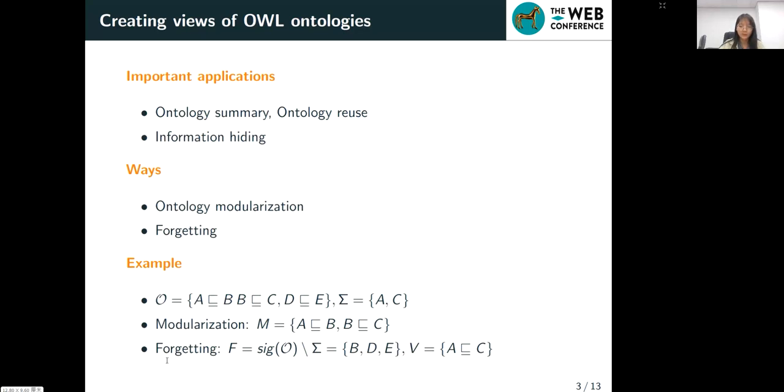Here's an example. We want to consider to forget the elements in sigma from ontology O and the modularization methods will just maintain the result of the set of A is subclass of B, B is subclass of C. But forgetting produces A is subclass of C which is more compact and which is better.